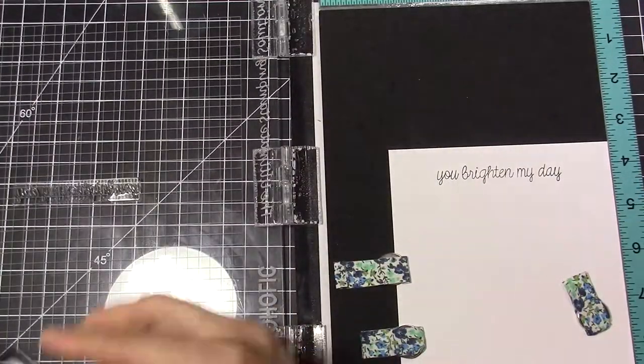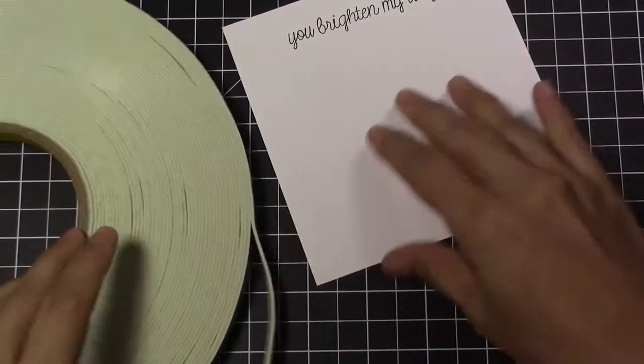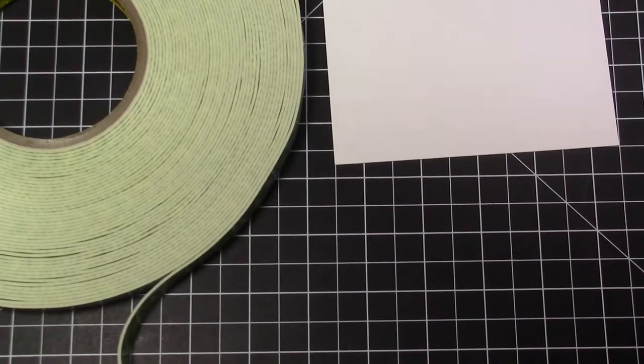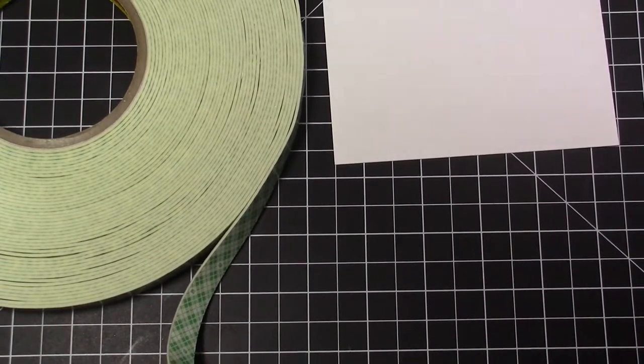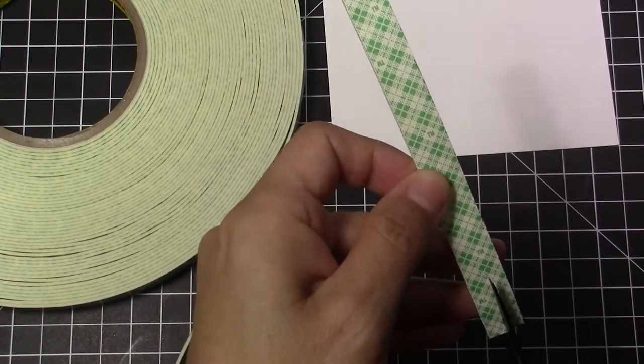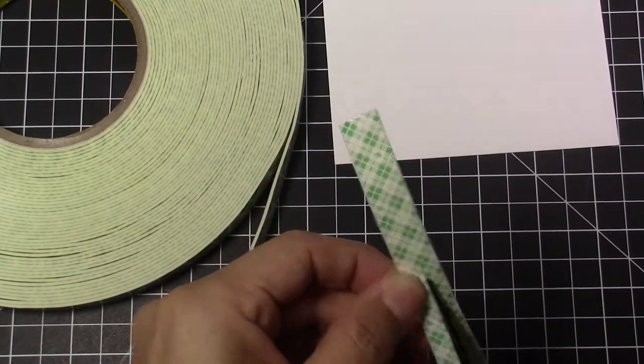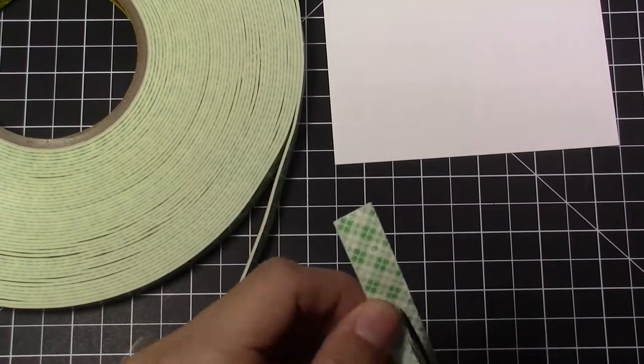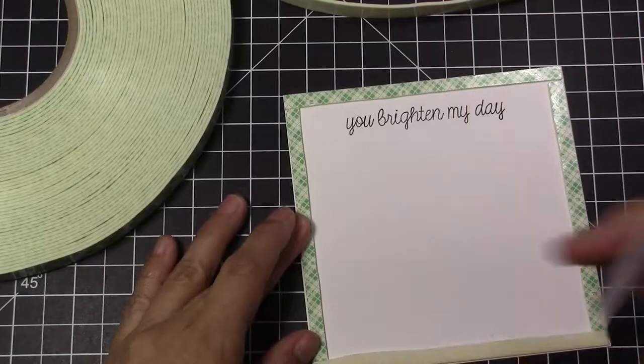After that, I'm going to use foam tape to go all around this piece of paper. If you want to do something like this, you can go directly to your card base.